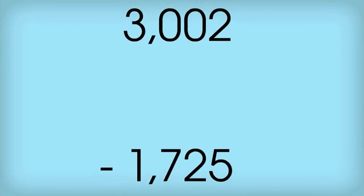So let's say we're going to subtract 3,002 minus 1,725. The first thing I'd like to do is write my numbers in expanded form.